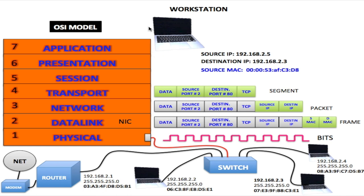At the top here, we have our computer connected to the OSI model. Now, if I bring up a browser like Firefox or Explorer and type an IP address in that browser, all of that information including the browser information is at the application layer. Once I put that information into the application layer and hit enter, everything goes to the presentation layer.